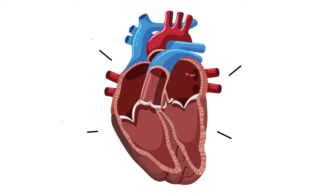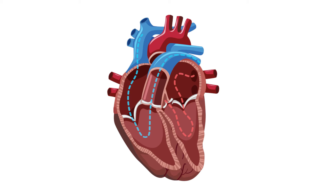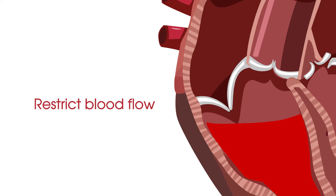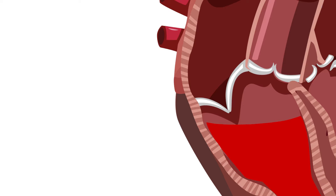Each valve is like a one-way door. During each heartbeat, the valves open to let blood flow from their chambers and close to stop the blood flowing backwards. Heart valve disease means that one or more of your heart valves don't open or close properly, which can cause the blood flow through your heart to and from your body to be disrupted.